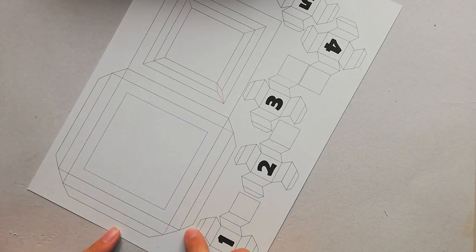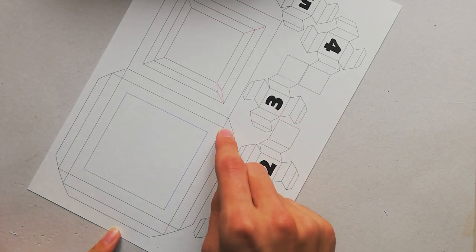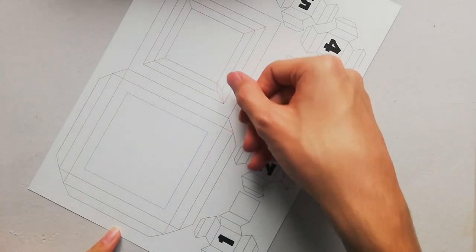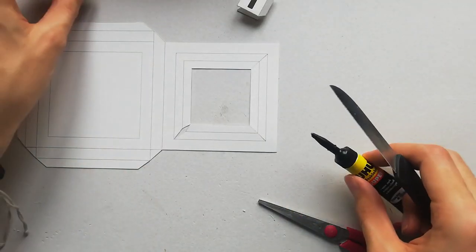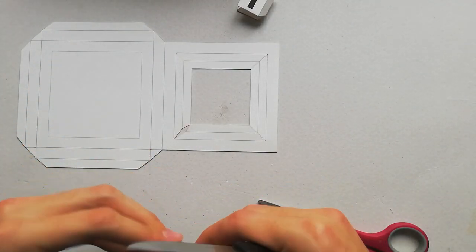With the big piece you have to cut along the outer shape and along the red lines as well. When everything is cut out we can start gluing the pieces together.